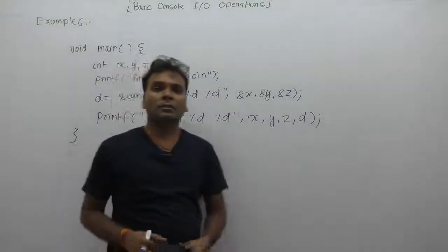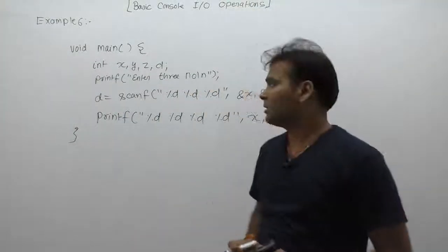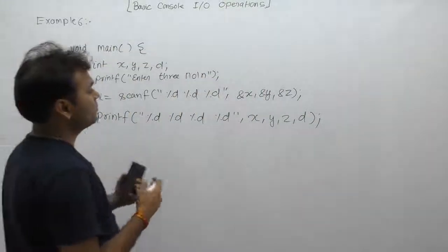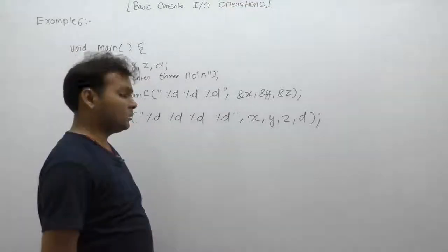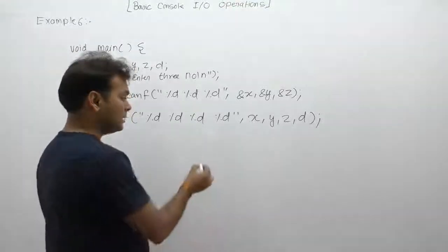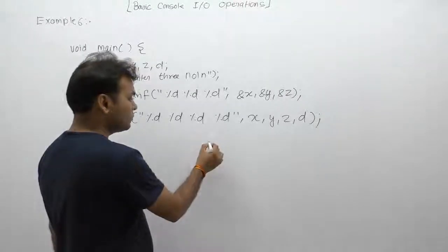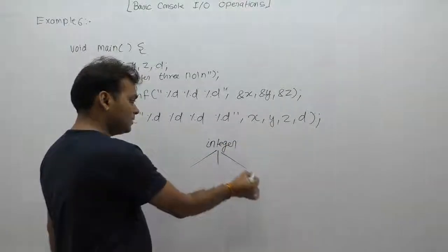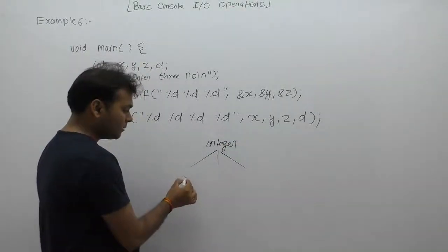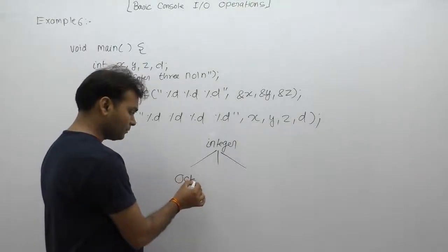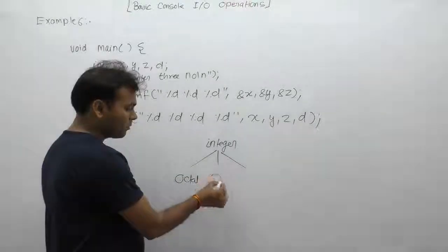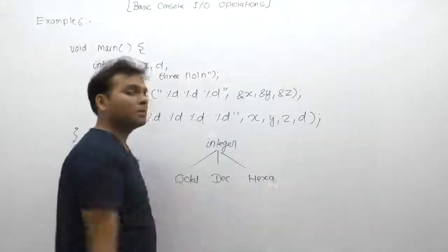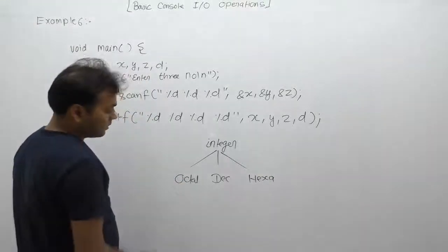Another example of scanner functions - we are testing with the same as the previous example but discussing different input values. As we know in C language, to represent integers, there are three ways: you can represent any integer number either in the form of octal number system, decimal number system, or hexadecimal number system.